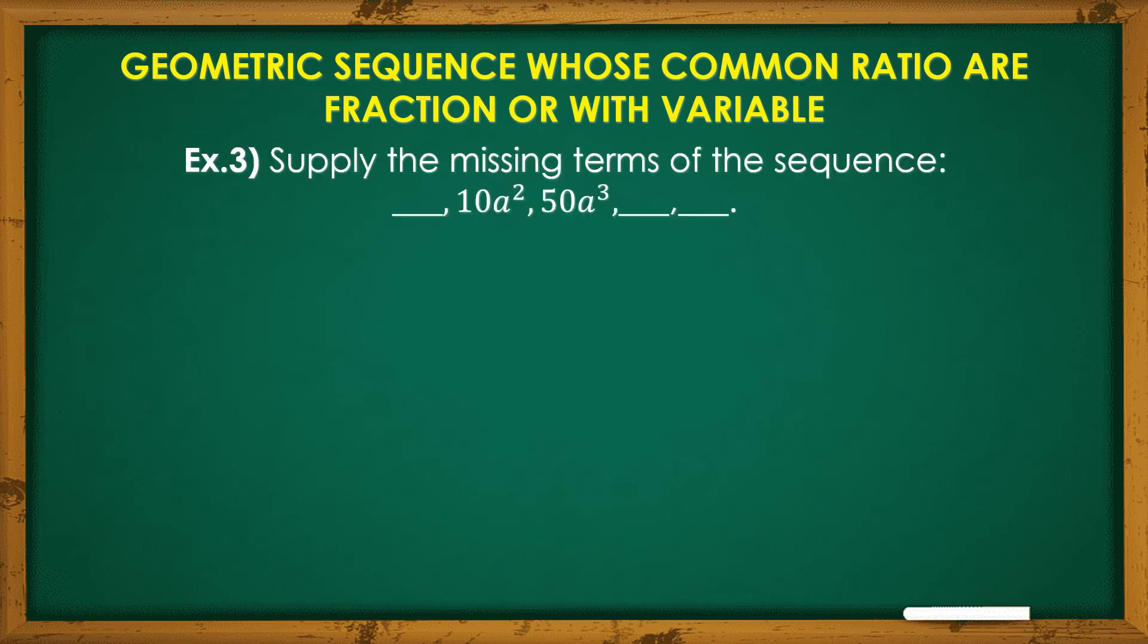So, for example number 3, let's supply the missing terms of the sequence. Observe na meron na tayong variable, variable a. So, paano natin kukunin yung mga missing terms? Ito ang ating solution. Again, we will start with finding or solving for the common ratio. To solve r, ang meron tayong consecutive na terms ay yung pangatlo and yung pangalawa. So, gagamitin natin yung a sub 3 as the term and a sub 2 as its preceding term. So, a sub 3 divided by a sub 2 will be our common ratio.